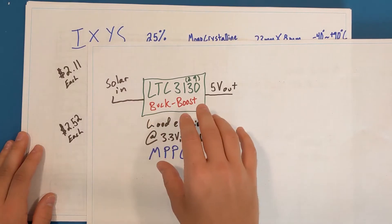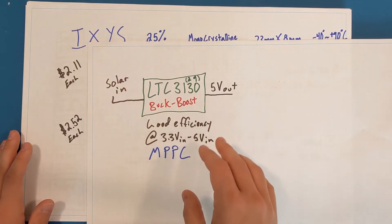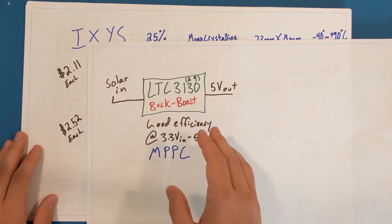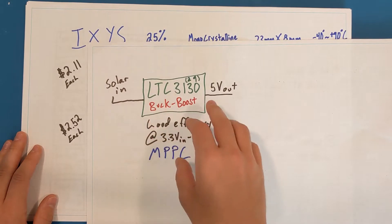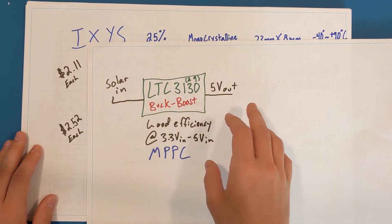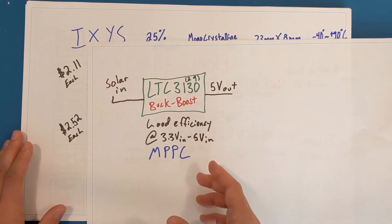So I found the LTC3130 or the 3129, which is a lower current version. This is a buck boost converter where I can hook up my solar input into this converter and have it output 5 volts. I picked this converter because it has maximum power point tracking, or what it calls maximum power point control. It has that as an input pin to better track the power output of these solar cells.